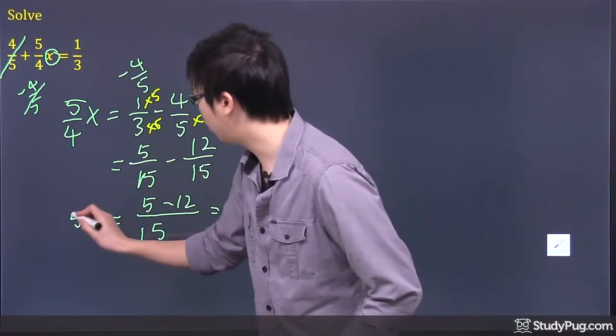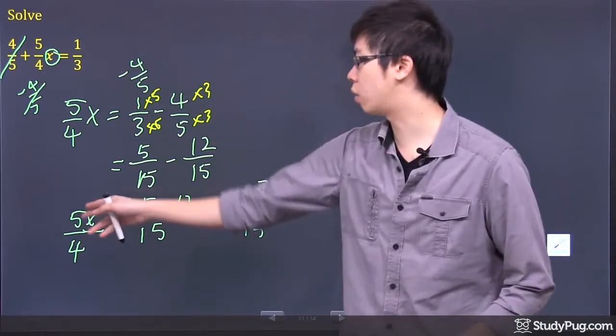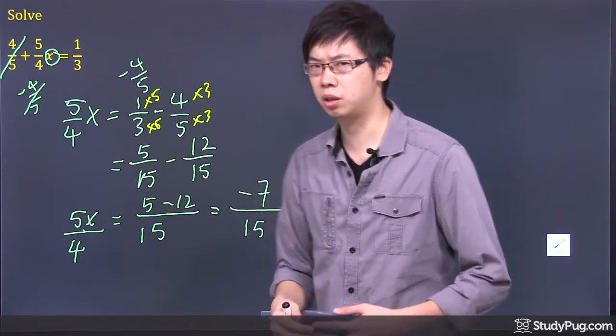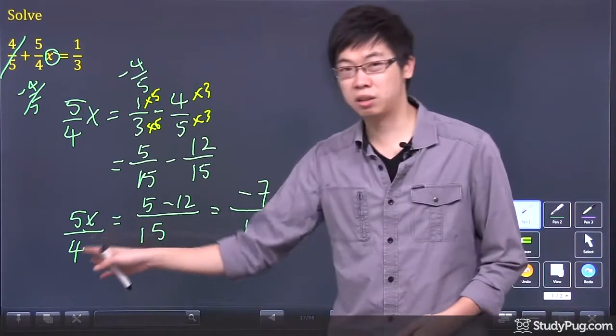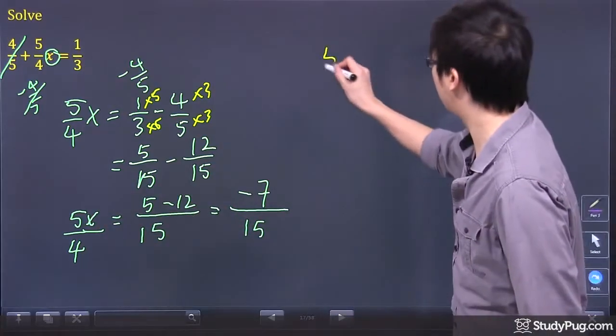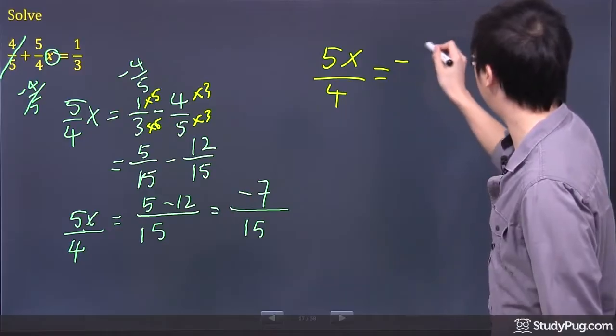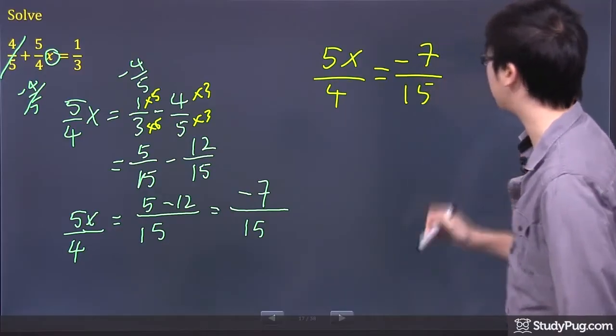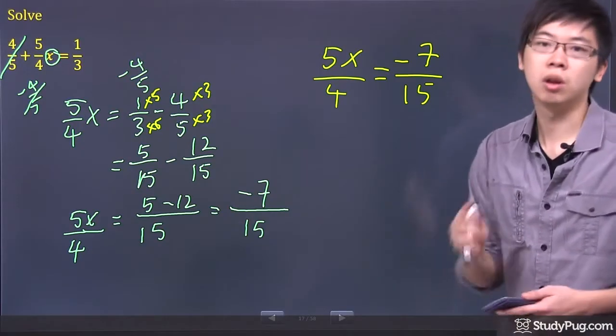On the left hand side, the 5 over 4x is still waiting for you. I would recommend you write the x right beside the 5, make it look a little bit nicer. Now, we're trying to solve the x still. But this time, if you look at your question now, it's 5x over 4 equal to negative 7 over 15. Two fractions on either side of the equal sign. What can you do? Cross multiply.